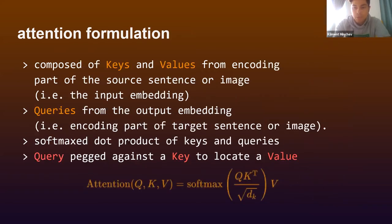The sets of parallel attention layers at each token are called multi-head attention, in order to vary what to pay attention to—perhaps verbs in a sentence or nouns in a sentence or different objects in an image. Multi-head attention is composed of those key-value pair vectors coming from the encoding part of the source, source being a sentence or an image. That is the input embedding and queries, also vectors from the output embedding, that is the encoding part of the target sentence or image.